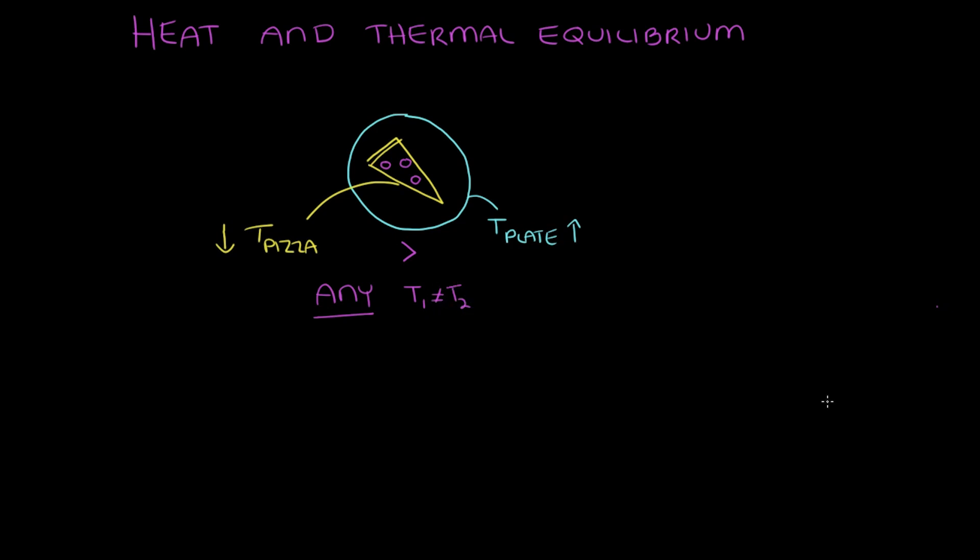We know temperature is how we express if something is hot or cold. But what does hot or cold mean? Temperature is actually the measure of the average kinetic energy of the particles in an object. So let's digest that for a second and break it down. Temperature is the average kinetic energy of particles.